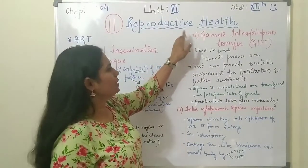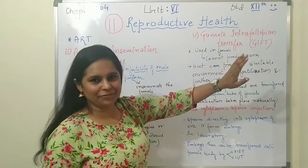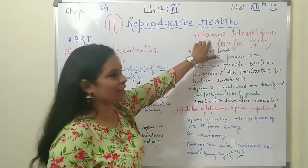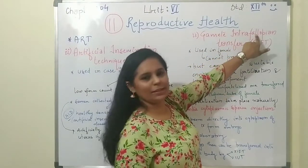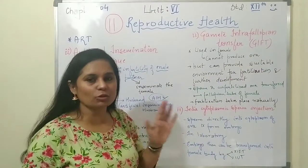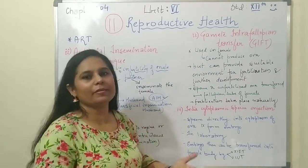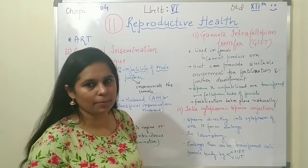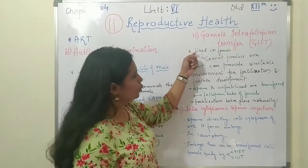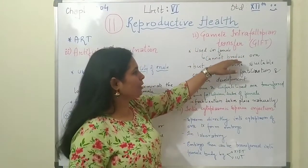Next is Gamete Intra-Fallopian Transfer, known as GIFT. In this technique, gametes are transferred to the fallopian tube. This technique is used in females who cannot produce ova.